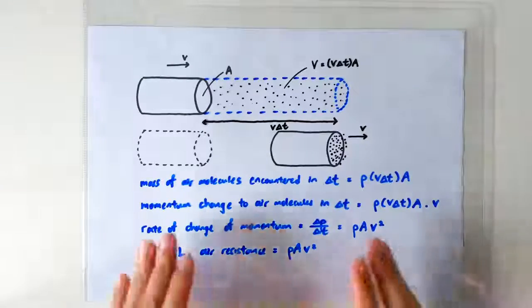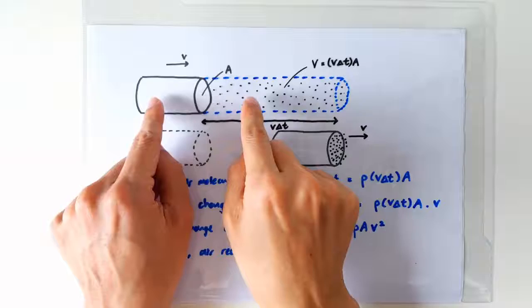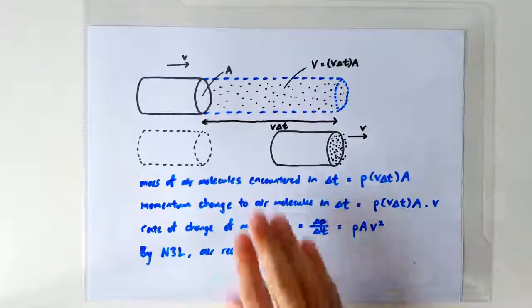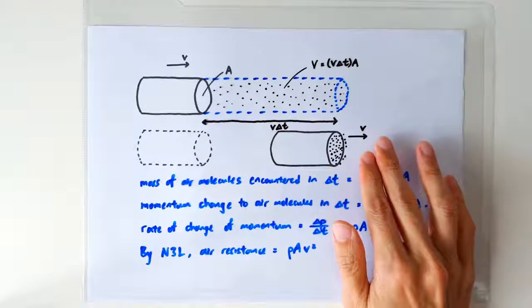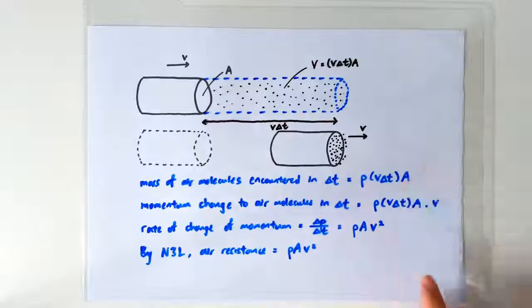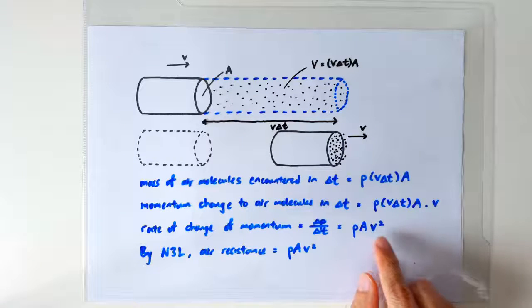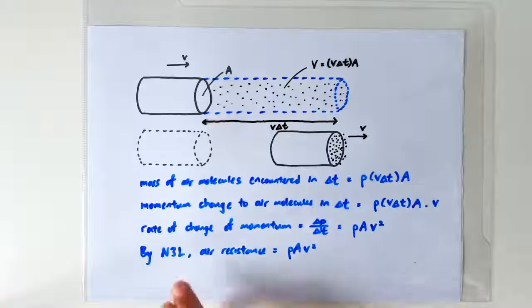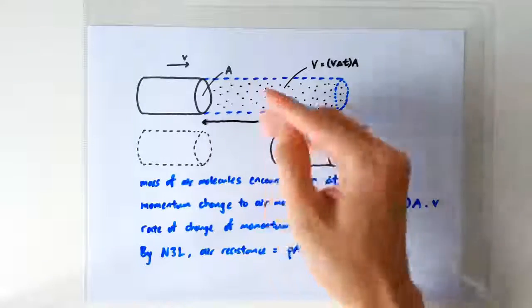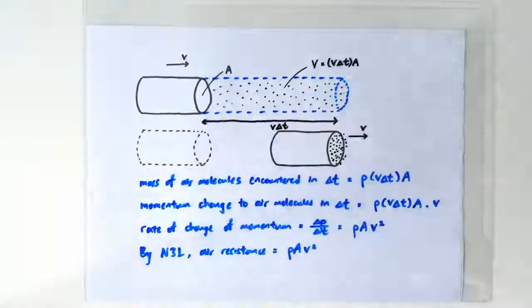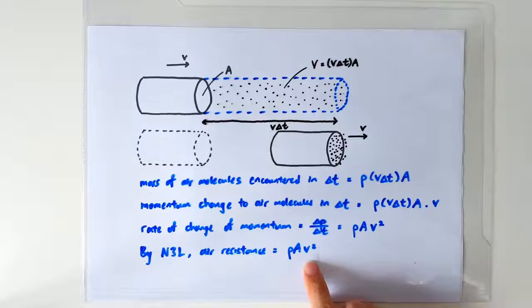So the force that the cylinder must exert on the air molecules in order to accelerate them from rest to travel at the same speed as the cylinder turns out to be rho A V squared. So by Newton's third law, the force that the air molecules exert on the cylinder should also be rho A V squared.